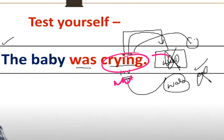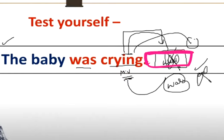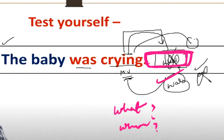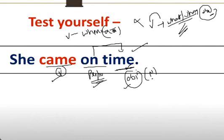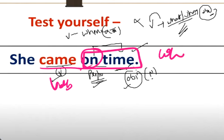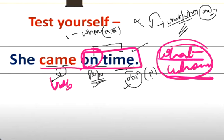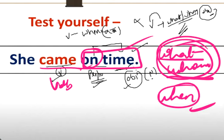We noted that 'the baby was crying' - after 'crying' there is no object. If there is no noun or pronoun after the verb, there is no object. To check, if there is a verb, ask 'what' or 'whom'. For example, 'she came on time' - what is the verb? We ask 'she came what?' or 'she came whom?' - the answer is 'when', not 'what' or 'whom'. So 'on time' is not the object.